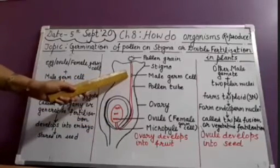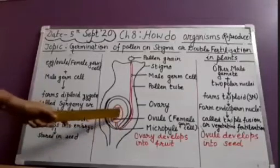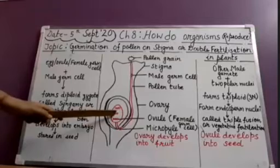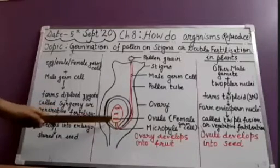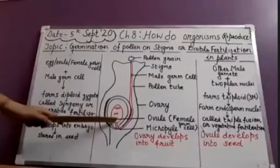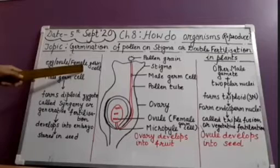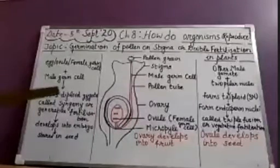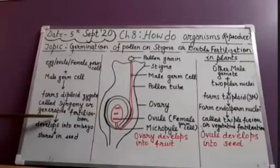The first pollen grain enters through this pollen tube and gets fertilized with the secondary nuclei. There are two types of nuclei: the outer ones are the secondary nuclei and the inner ones are known as polar nuclei. The first fertilization of one female germ cell — the ovule — takes place with the male germ cell, the pollen grain, and it forms a diploid zygote. It is diploid because both the male and female cells have fertilized. This diploid zygote is also known as syngamy, or this leads to generative fertilization.